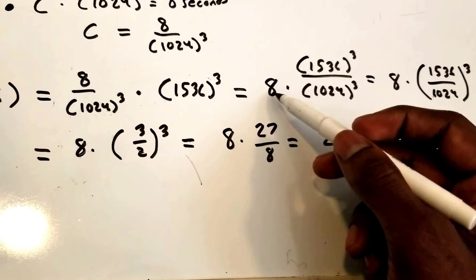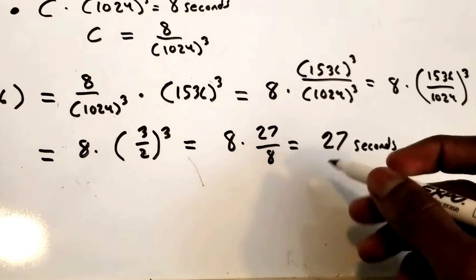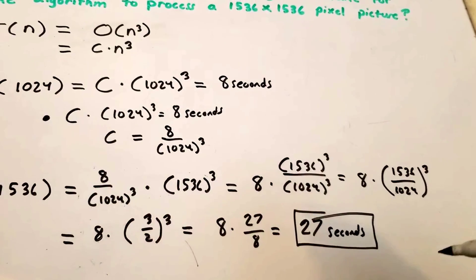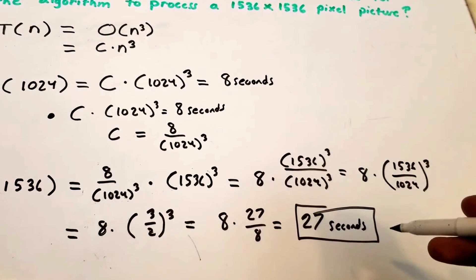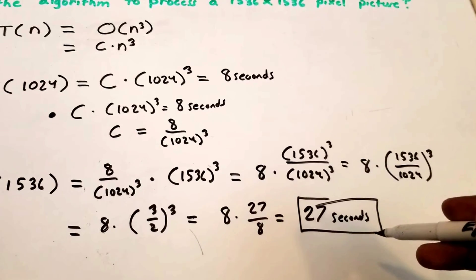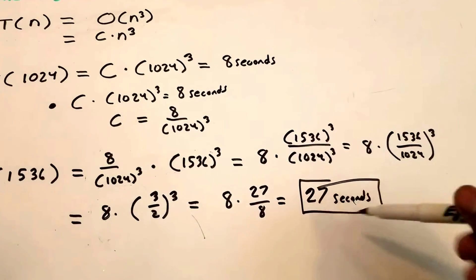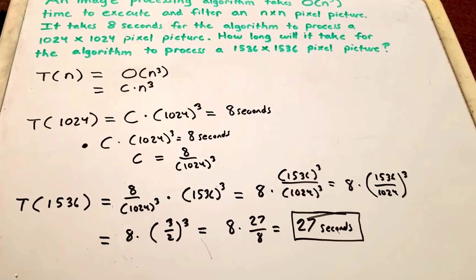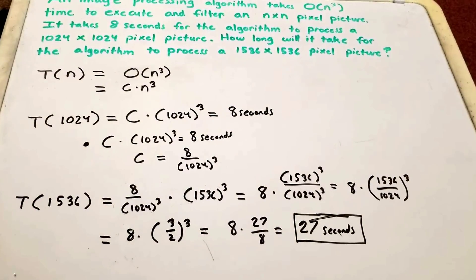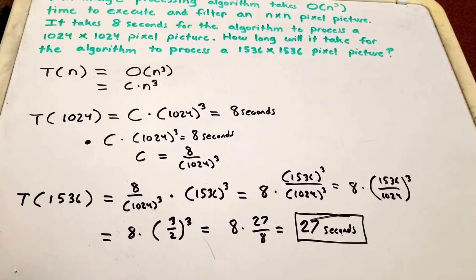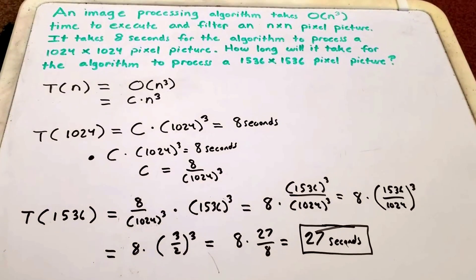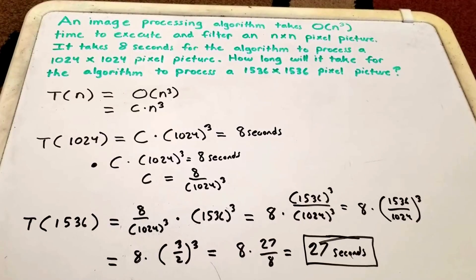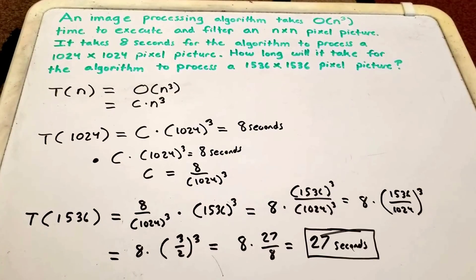So the answer is 27 seconds. How long will it take for the algorithm to process a 1536 by 1536 pixel picture? The answer is 27 seconds. Thank you for watching — I hope it was useful and helpful, and I hope you can see an application for algorithm analysis. Please leave likes, questions, and comments, don't forget to subscribe and share, and I'll see you in the next video.